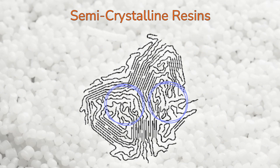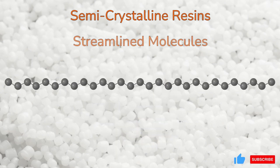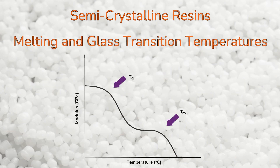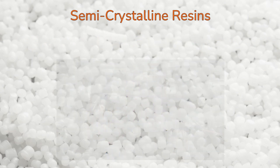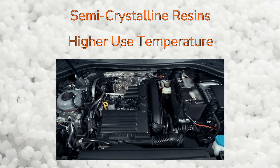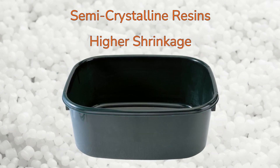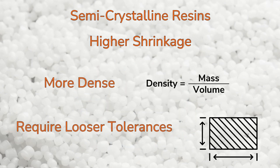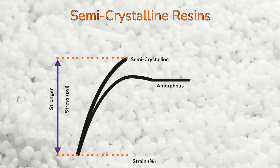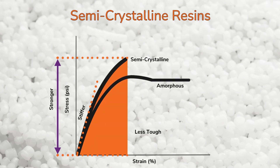These resins also incorporate some level of amorphous content between the crystalline regions. The traits of semi-crystalline polymers will be dependent on the degree of crystallinity. Traits include streamlined molecules with no bulky side groups, the presence of both a melting temperature and a glass transition temperature, good chemical resistance in most cases, and higher use temperature than comparable amorphous resins. Because semi-crystalline resins shrink more than amorphous resins, they tend to be more dense and require looser part tolerances. They are also generally stronger and stiffer, but less tough than amorphous resins.